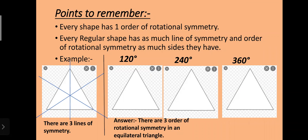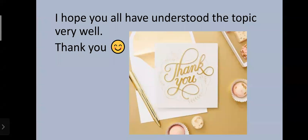For example, an equilateral triangle is a regular figure with all three sides equal. So it has three lines of symmetry and three orders of rotational symmetry — at 120 degrees, 240 degrees, and 360 degrees it looks the same as the original equilateral triangle. So that was all about rotational symmetry. I hope you all understood the topic very well. Thank you.